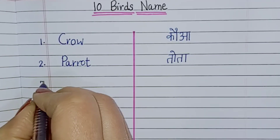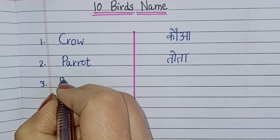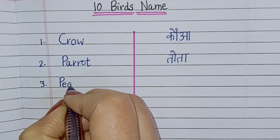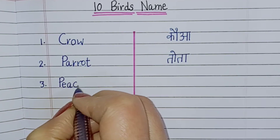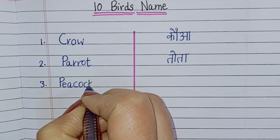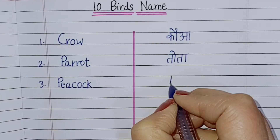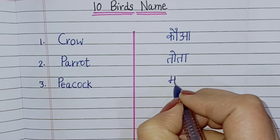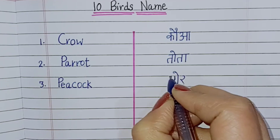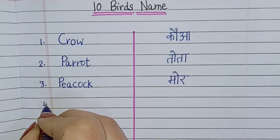Number 3: P-E-A-C-O-C-K, Peacock. Peacock means Moor.